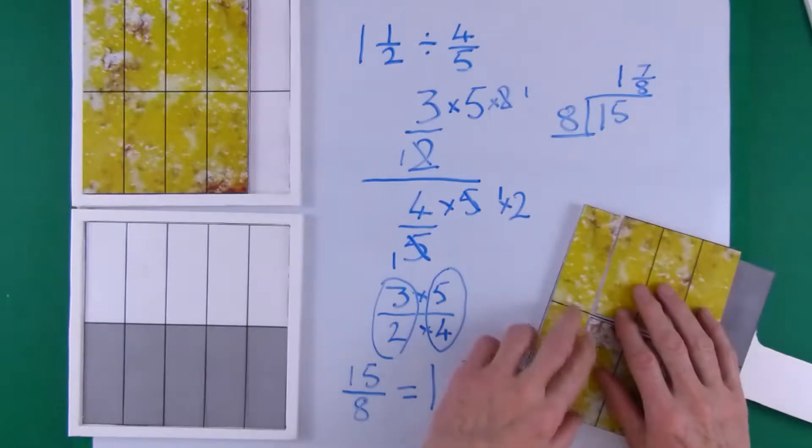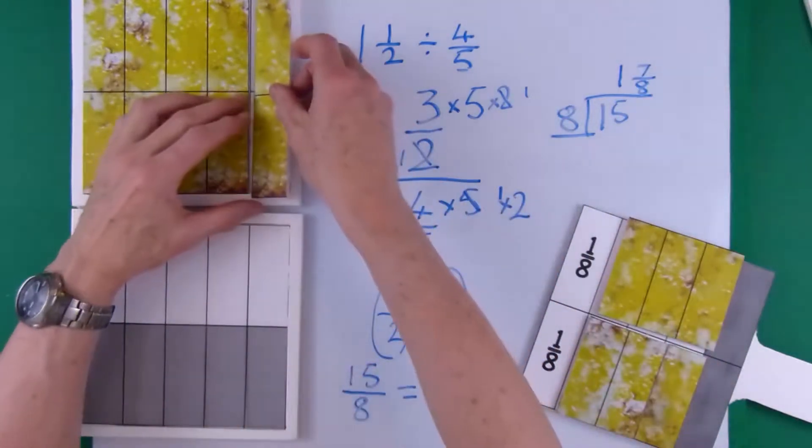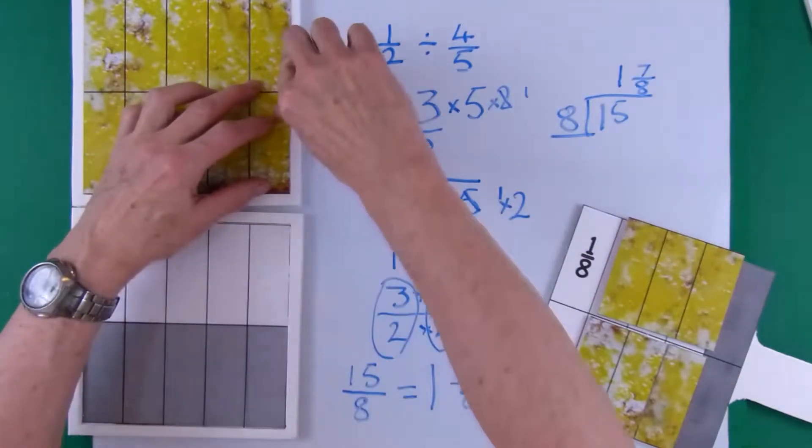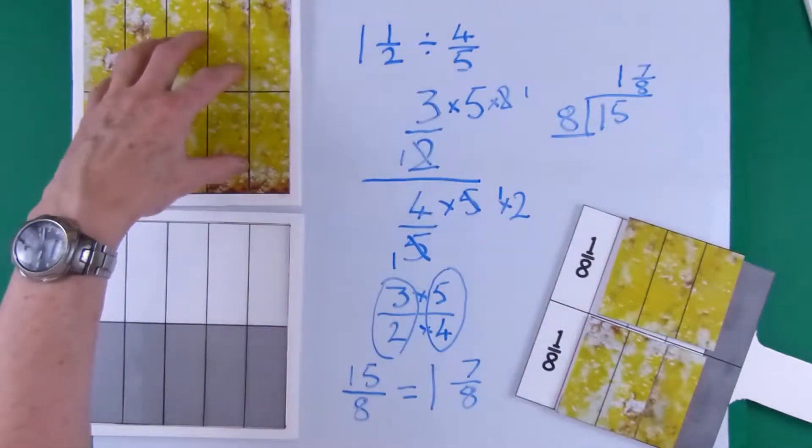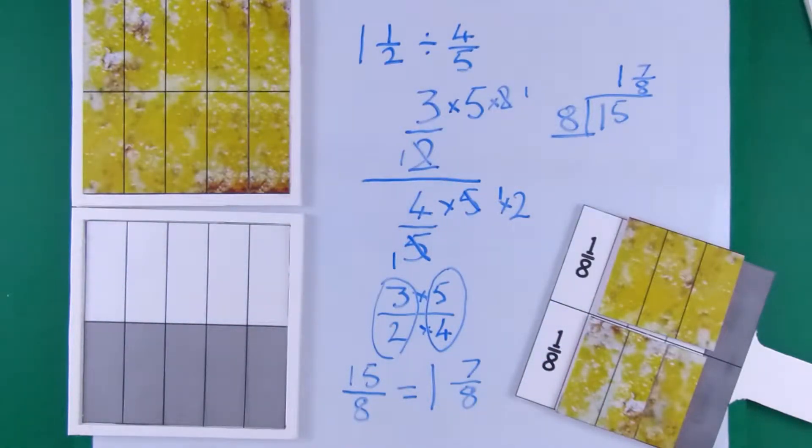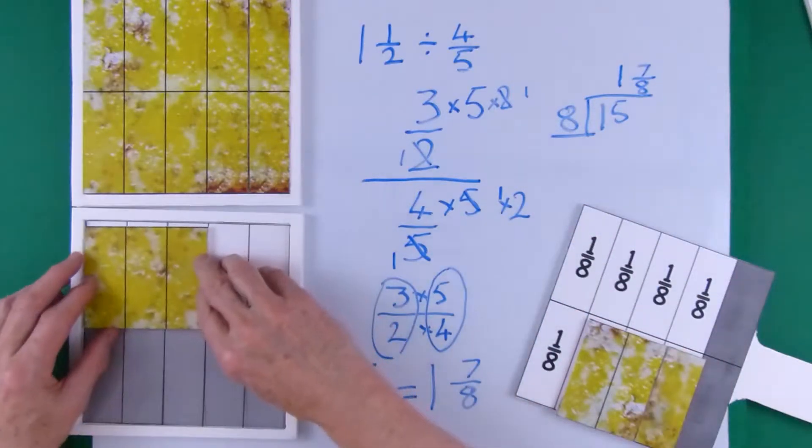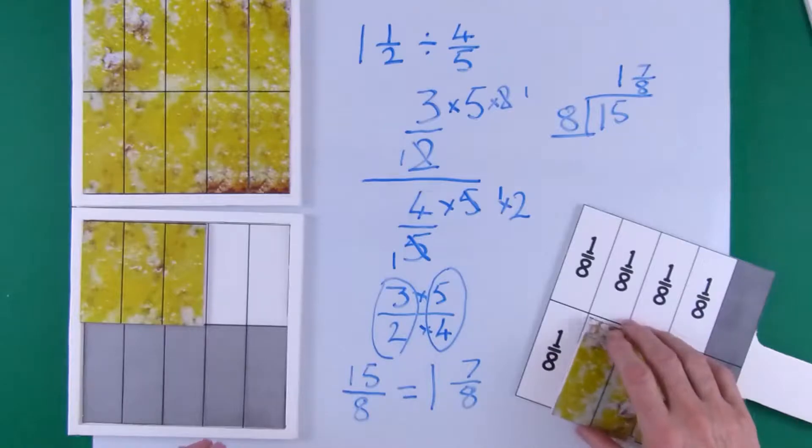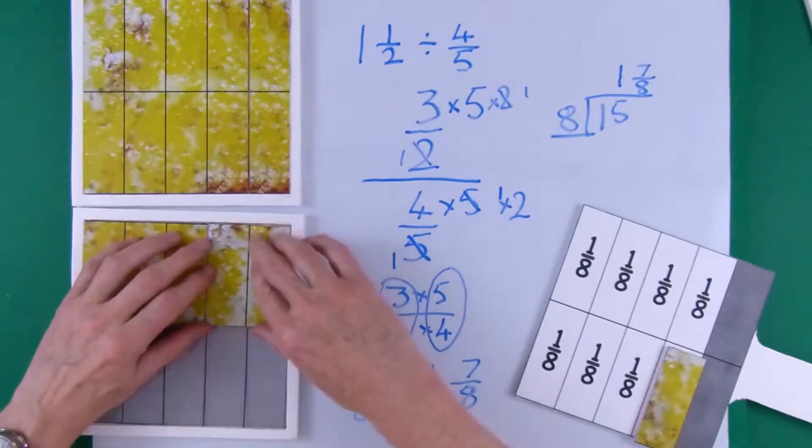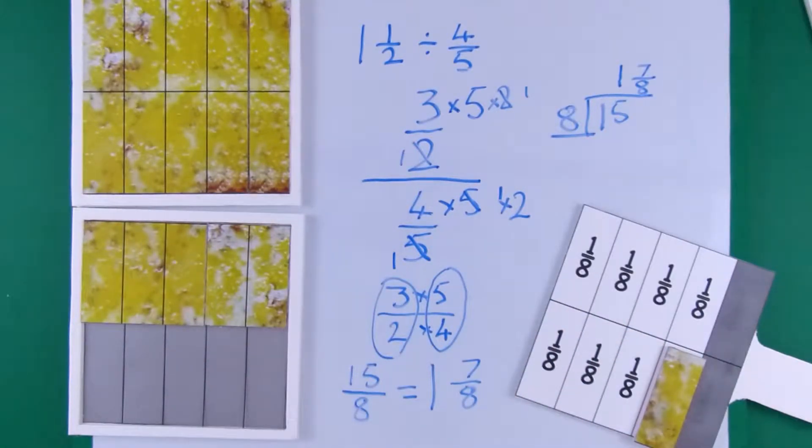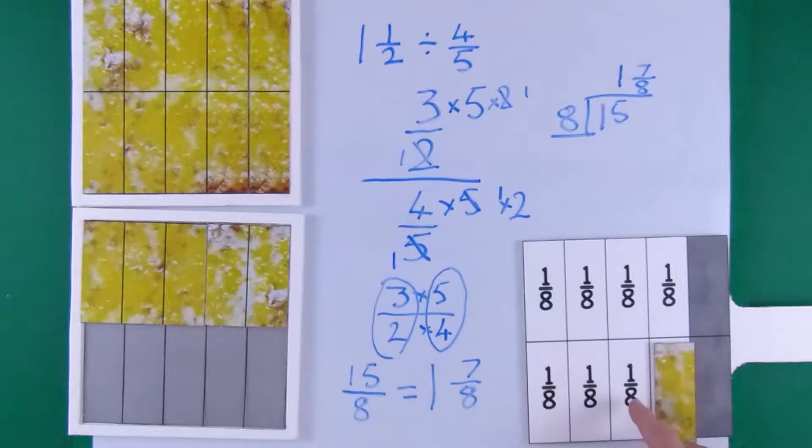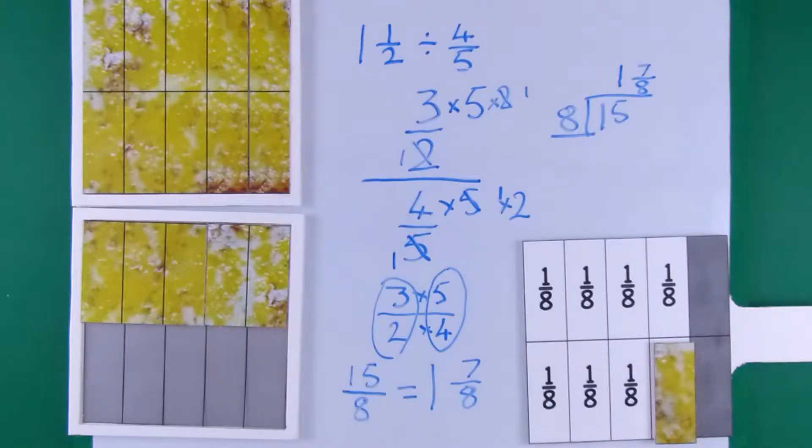And now we can see we can put another 2 bits, another 2 eighths in there to fill the first pizza. And now we've got 5 bits in the second pizza. So we take 3 of the bits and another 2 for that level. And now we can see how much we've used. We have used 1 whole 4 fifths pizza and 7 eighths of another 4 fifths pizza.